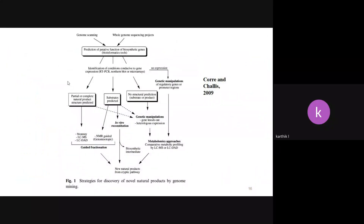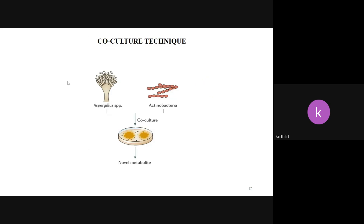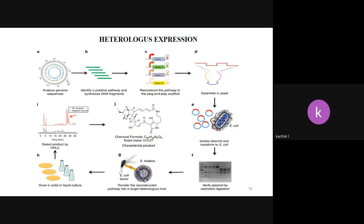How do we activate these silent genes? The traditional OSMAC approach — one strain, many compounds — involves changing pH, temperature, carbon source, and nitrogen source. But this doesn't work for all strains. When expression fails, genetic manipulations and heterologous expression technologies are needed. Co-culture technique is still a very good method to activate silent genes from fungi, and heterologous expression is another unique technology.